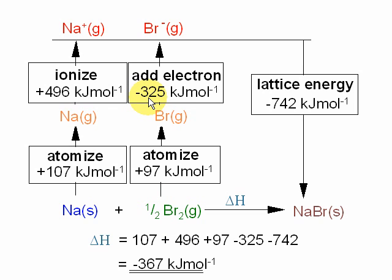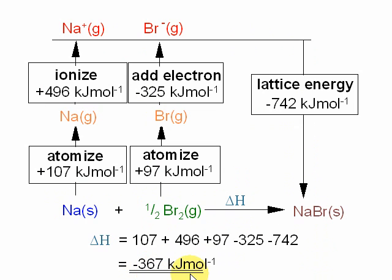To work out delta H, the unknown enthalpy change, we go up these arrows and down that arrow: 107 plus 496 plus 97 minus 325, minus 742, gives minus 367 kJ per mole. That's negative, as you'd expect for an exothermic reaction — which you would expect for a metal reacting with a non-metal to form an ionic substance.